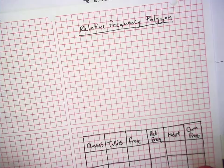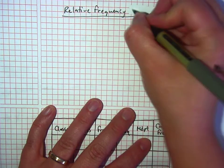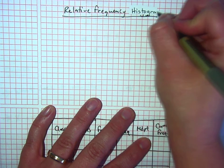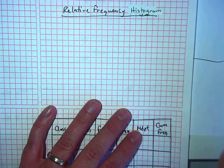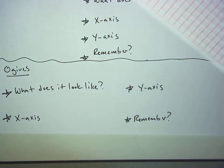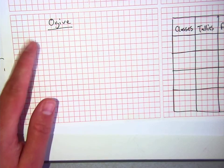On graph paper, we're going to have three different examples. One for a frequency polygon, one for a relative frequency histogram, and one for an ogive. It doesn't really matter what order they're in, but you're right, I do normally put it there. My bad.